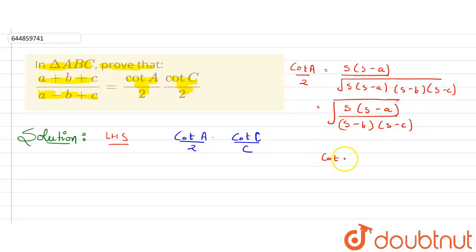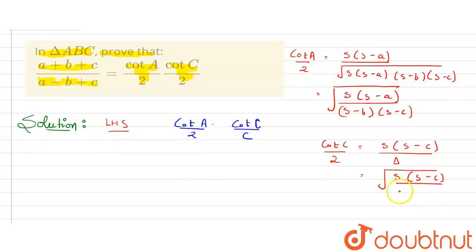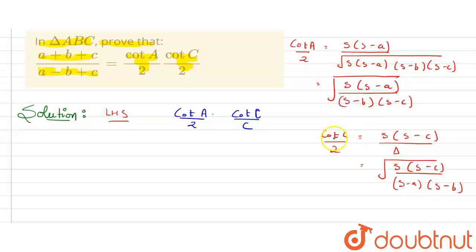Similarly, for cot(C/2), the formula is s(s - c) divided by delta. This further simplifies to the square root of s(s - c) divided by (s - a)(s - b). These are the two values of cot(A/2) and cot(C/2), so let's substitute them.